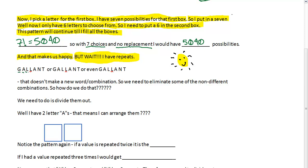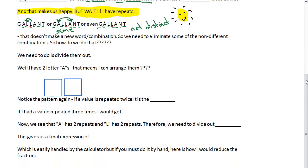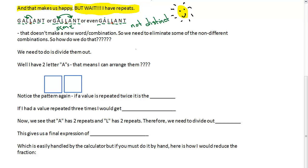So GALLANT can be G-A-L-L-A-N-T. But what if I took this L and I put it over here? Then you would have G-A-L-L-A-N-T. You're like, wait a minute, that's exactly the same. Or even if I took the A and I put that A over there and I switched them, you would still have G-A-L-L-A-N-T, and these are not distinct. And if you'll remember, that was the criteria in the problem. As I scroll up here, the letters have to be distinct. So what does that mean for us as we go through this problem? That doesn't make a new word or combination. So we need to eliminate some of these non-different, non-distinct combinations.